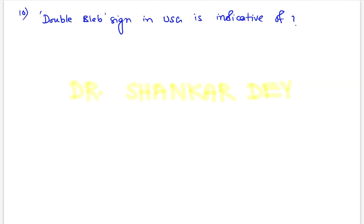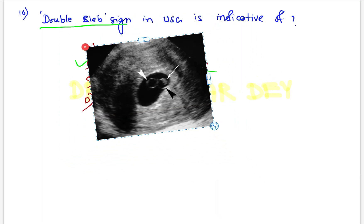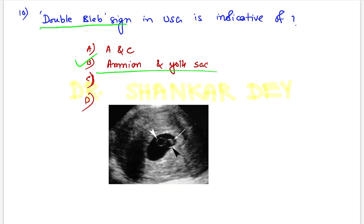Question number 10: Double bleb sign. Double bleb sign in USG is indicative of what? The options included amnion and chorion, amnion and exocoelomic cavity, and others. The answer is that amnion and exocoelomic cavity are seen as the double bleb sign on USG. You can see the two blebs in the USG image — one is the amnion and the other is the exocoelomic cavity. This is one of the earliest sonological features. So this is the double bleb sign in USG.